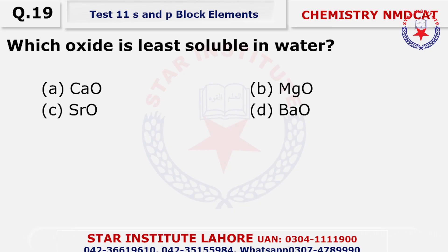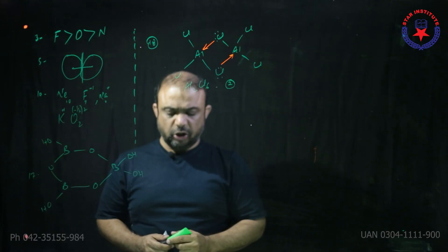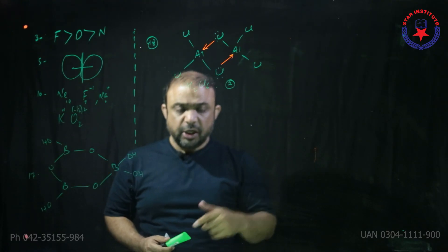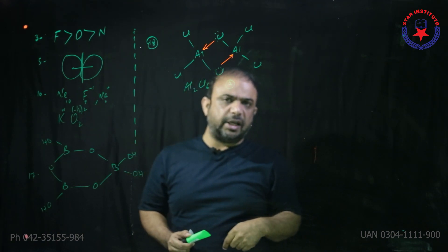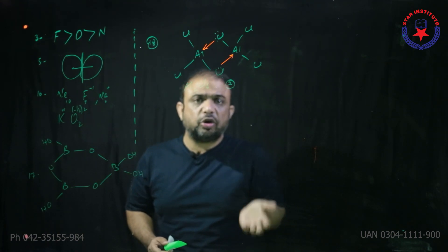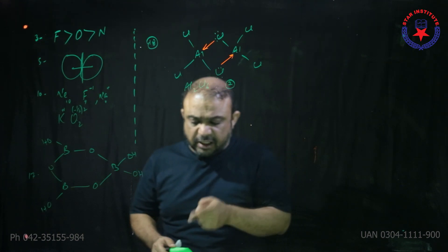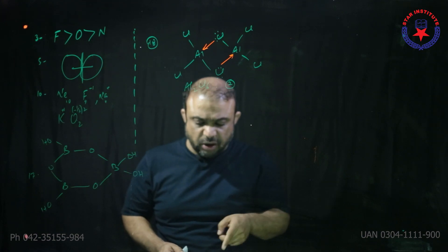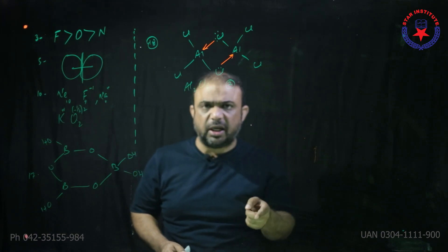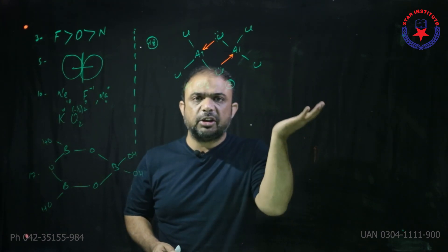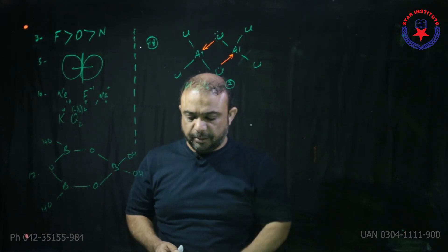Question number 19: Which oxide is least soluble in water? Top to bottom, solubility of oxides and hydroxides decreases. Among the options — calcium, magnesium, strontium, and barium oxide — magnesium is the topmost in the group, so magnesium oxide is your answer.